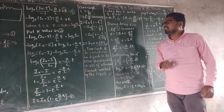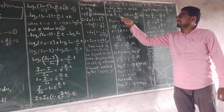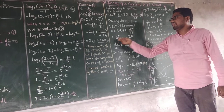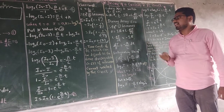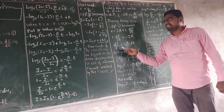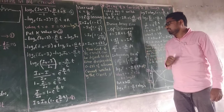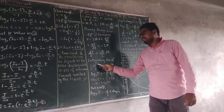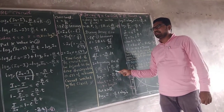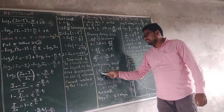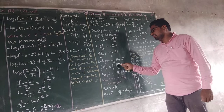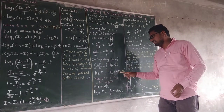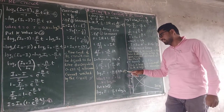Substituting E = 0 into equation 1: 0 = IR + L(dI/dt), which gives L(dI/dt) = -IR. Rearranging: dI/I = -(R/L)dt. Integrating both sides: log I = -(R/L)T + K. This is equation number 2 for the decay process.